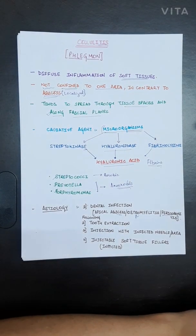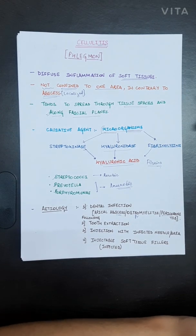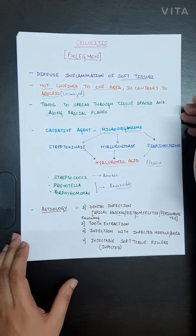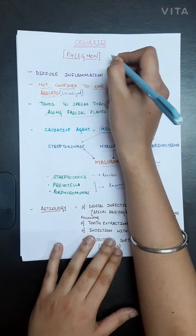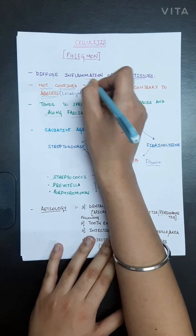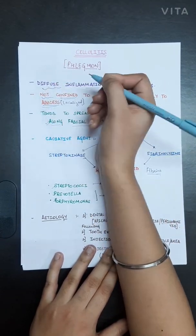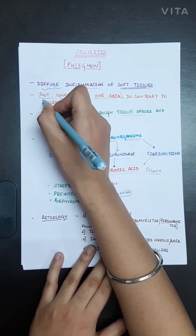Hey all, today we are going to discuss oral infections such as cellulitis. It is basically a space infection, also known as phlegmon. It is a diffuse inflammation of soft tissues, not confined to one area, whereas abscess is localized.